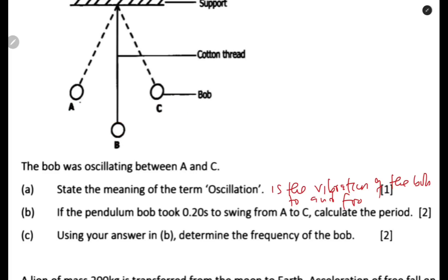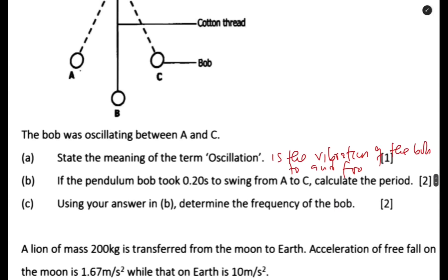If the pendulum bob took 0.2 seconds to swing from A to C, calculate the period. Again, from A to C the number of oscillations is 0.5, just as before. Using the formula: Period = time / number of oscillations.